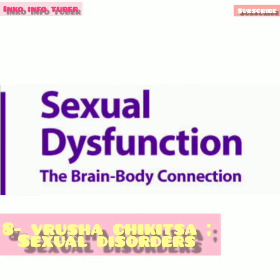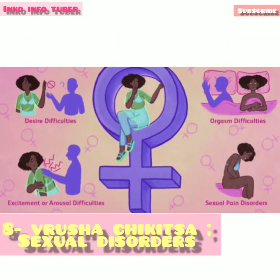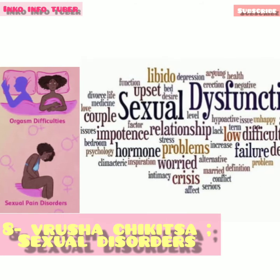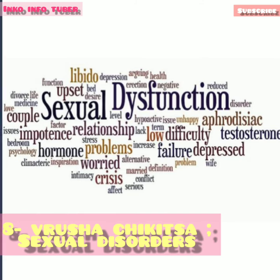The eighth and last one is Vrusha Chikitsa, that is Sexual Disorders. Nowadays, females are suffering from PCODs and hence infertility happens. That is to say, a deficiency of ovum or sperm leads to sexual disorders, and hence this course is in more demand nowadays.